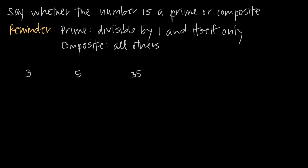In this video we're talking about prime and composite numbers, and we're trying to figure out which of the numbers we've been given are prime numbers and which ones are composite numbers. Numbers are either prime or composite — they can't be both. So what is a prime number and what is a composite number?